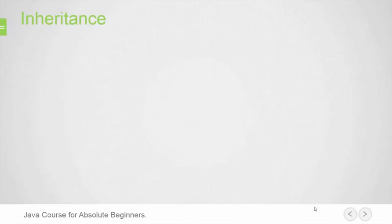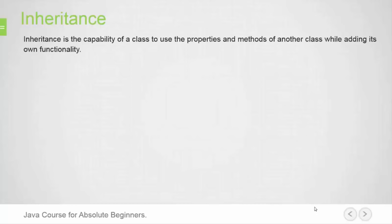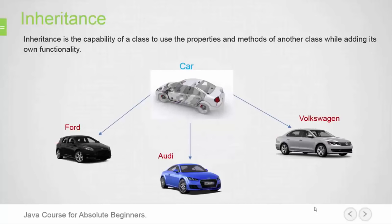What is inheritance? In simple words, inheritance is a way to define a newer class using classes which have already been defined. In other words, inheritance is the capability of a class to use the properties and methods of another class while adding its own functionality. For example, Ford car, Audi car, and Volkswagen car are subclasses from the class Car. These subclasses automatically take on all the behavior and attributes of their superclass Car. In the Java programming language, each class is allowed to have one direct superclass, and each superclass has the potential for an unlimited number of subclasses.